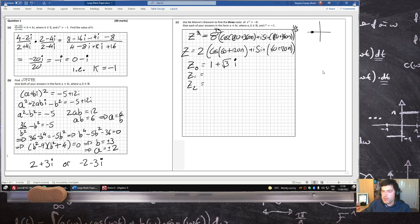n is 1, that would be 180, cos 180 is minus 1 and that's 0, so that'll be minus 2. And then the last one would be 1 minus root 3 i.